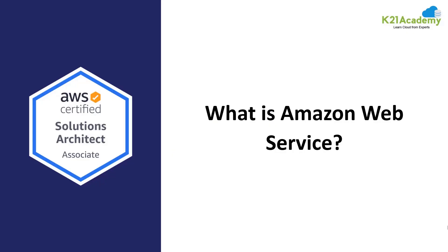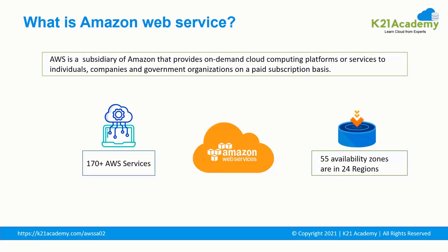Now let's explore each cloud provider individually. Amazon Web Service is a subsidiary of Amazon that provides on-demand cloud computing services. It has 170 plus services currently running. There are 55 availability zones across 24 regions. Availability zones are physical data centers within a region, providing inexpensive, low-latency network connectivity to other availability zones in the same region.